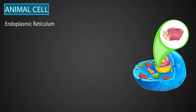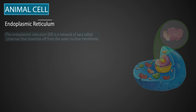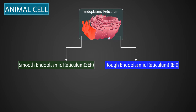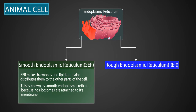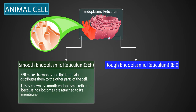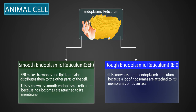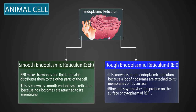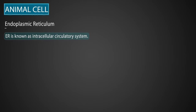Now let's learn about the endoplasmic reticulum. Endoplasmic reticulum, or ER, is a network of sacs called cisternae that branches off from the outer nuclear membrane. It is of two types: smooth endoplasmic reticulum (SER) and rough endoplasmic reticulum. SER makes hormones and lipids and distributes them to other parts of the cell. It is called smooth because no ribosomes are attached to its membrane. The rough endoplasmic reticulum has many ribosomes attached to its membrane or surface, where ribosomes synthesize protein. The endoplasmic reticulum is also known as the intracellular circulatory system.